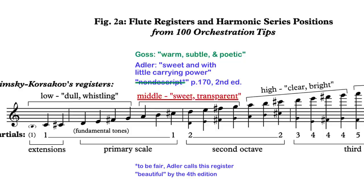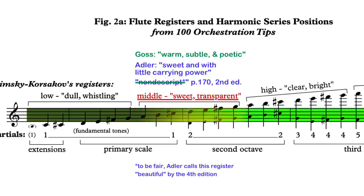As an orchestrator, I'd call the middle register warm, subtle, and poetic. Where Adler might equate its lack of brilliance with lack of distinctive features, I see it as being full of potential — as if the capacity for the high register's bright tone is just slightly bottled up in the middle, but ready to burst outward and upward. Conversely, the velvet darkness of the low register is only slightly brightened as it rises to the middle, revealing a bit more sheen and radiance. It's up to the orchestrator to explore the potential of these opposing qualities as they meet in the center of the instrument.